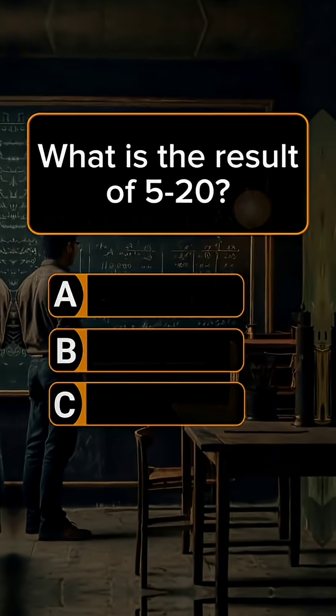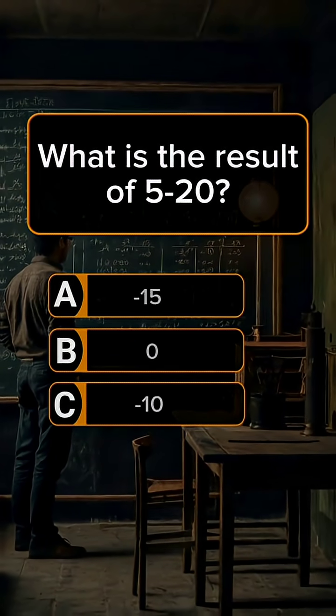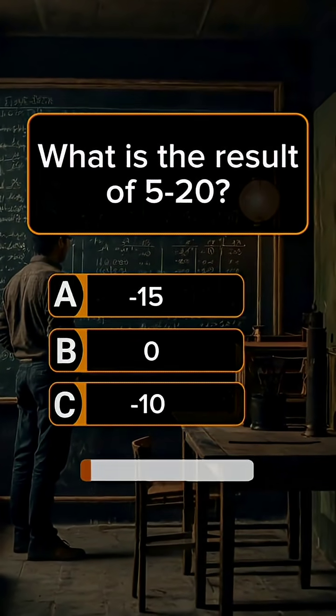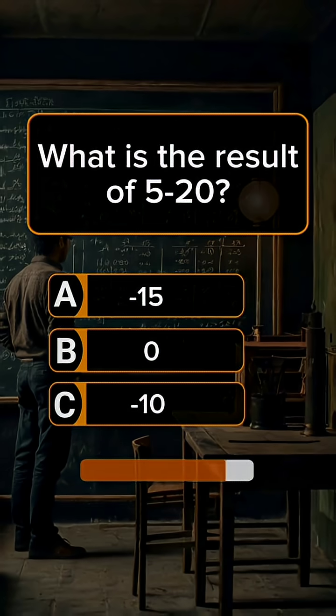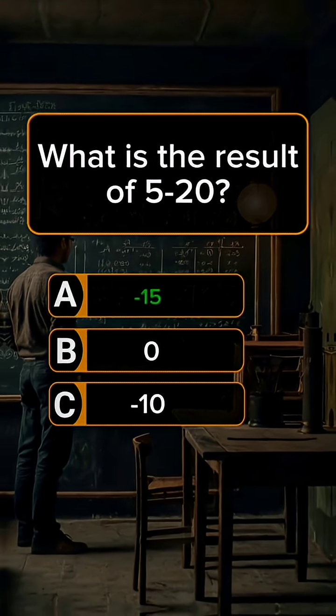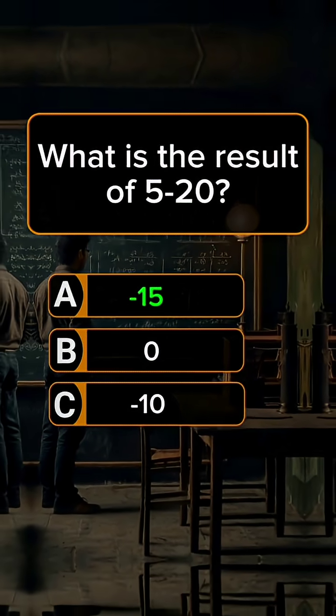Question 5. What is the result of 5 minus 20? Answer A: minus 15.